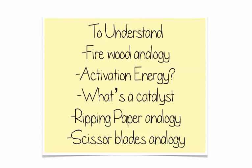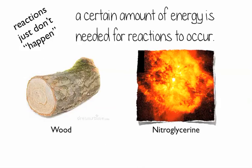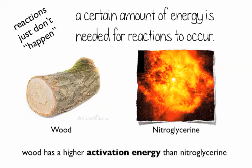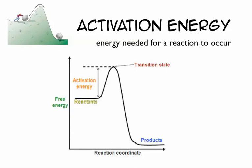A catalyst is anything that speeds up a reaction by lowering activation energy. Ripping paper was an analogy — it's really hard without help, and the help is the enzyme acting like scissors. A specific part of the enzyme works on the substrate, just like scissor blades cut paper. We also saw a video on nitroglycerin versus wood: wood has a higher activation energy, needing a lot of energy to get going, but nitroglycerin needs only a hammer strike to explode.